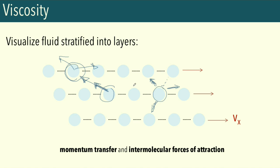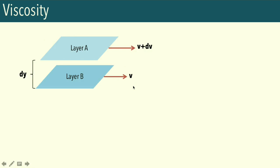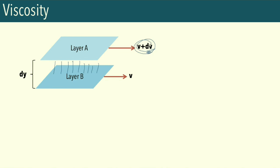We can also visualize this in 3D. Instead of a two-dimensional picture, we now have a 3D model of two parallel planes of area A. We have layer A and layer B separated by distance dy. Layer A is moving a little faster than layer B — the velocities differ by V plus dV, a very small difference. Overall, these two layers are slipping past one another, but there's friction between them that prevents layer A from moving faster.